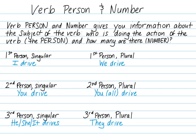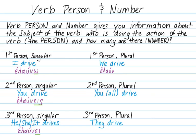Greek differentiates person and number by changing the ending of the verb. For first person singular, it's 'elouō,' with the ending -ō, to show 'I drive.' Second person singular, 'eloueis,' the ending -eis signals 'you drive.' Third person singular, 'elouei,' ending -ei, is the third person singular. First person plural, 'elouomen,' ending -omen, signals 'we drive.'